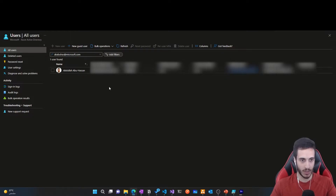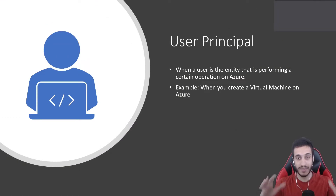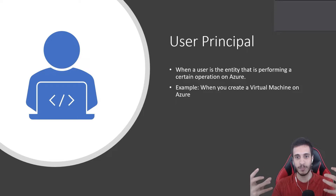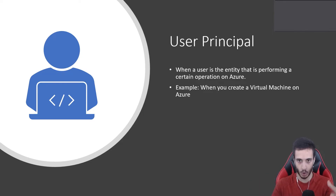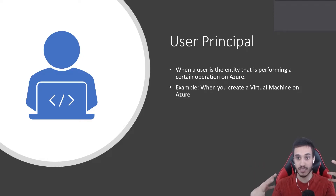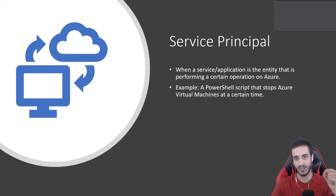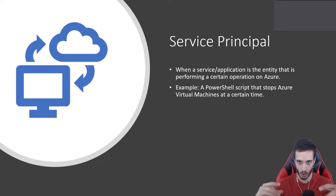Without being registered, Azure Active Directory cannot prove my identity and give me back a token to perform operations on Azure. The example I've gone through is known as a user principal — this is when a user is the entity performing a certain operation on Azure. The simplest example is whenever you create a virtual machine on Azure. However, with a service principal, this is when a service or application is the entity performing a certain operation on Azure.